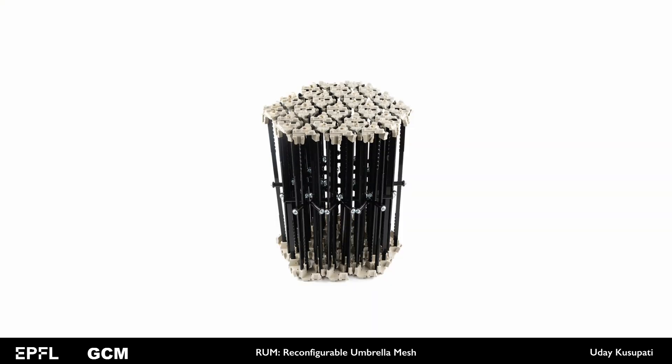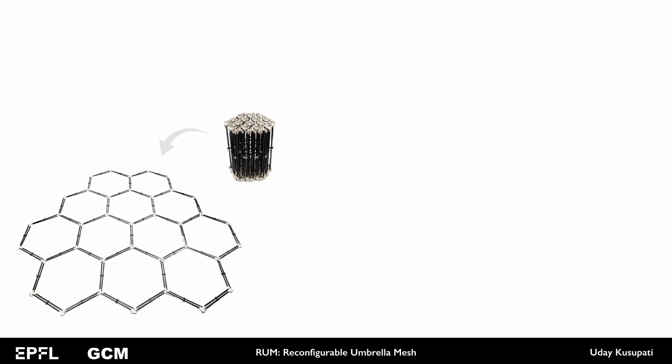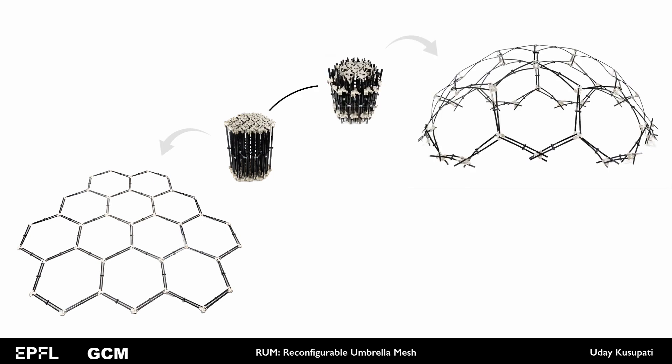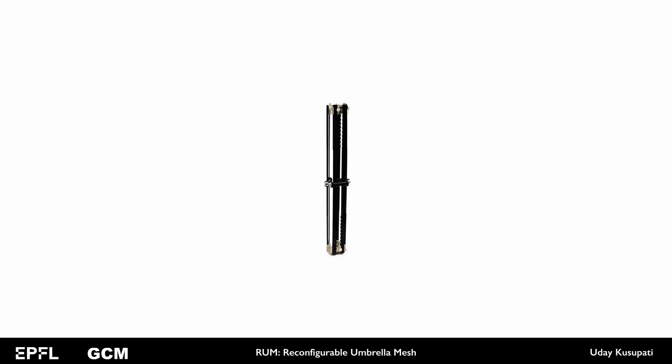We present Reconfigurable Umbrella Mesh, or RAM. RAMs are deployable structures with a compact state. In addition to being obviously deployable, a single RAM can be reconfigured to deploy into several desired shapes. Here, the same RAM's compact state is reconfigured to deploy into a flat surface, or a dome, or a negatively curved shape. RAMs are assembled with identical cells that can be mass-fabricated and assembled as per need.